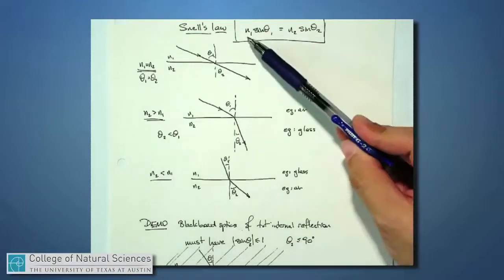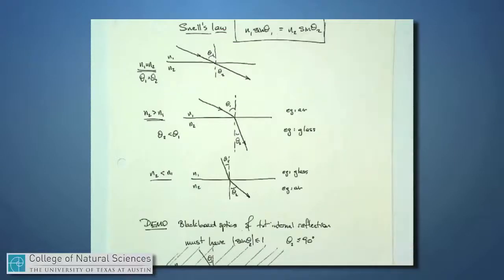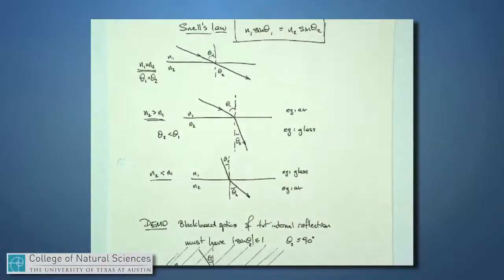then Snell's Law says if these two n's are the same, then these two sines of these angles are the same. In fact, the light will not be perturbed in any way. It will transmit in exactly a straight line.